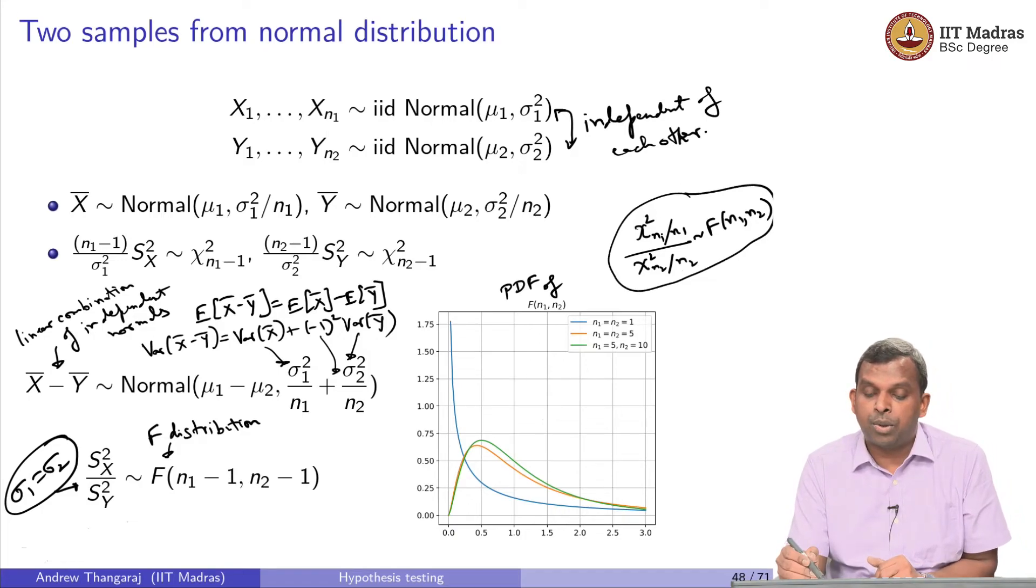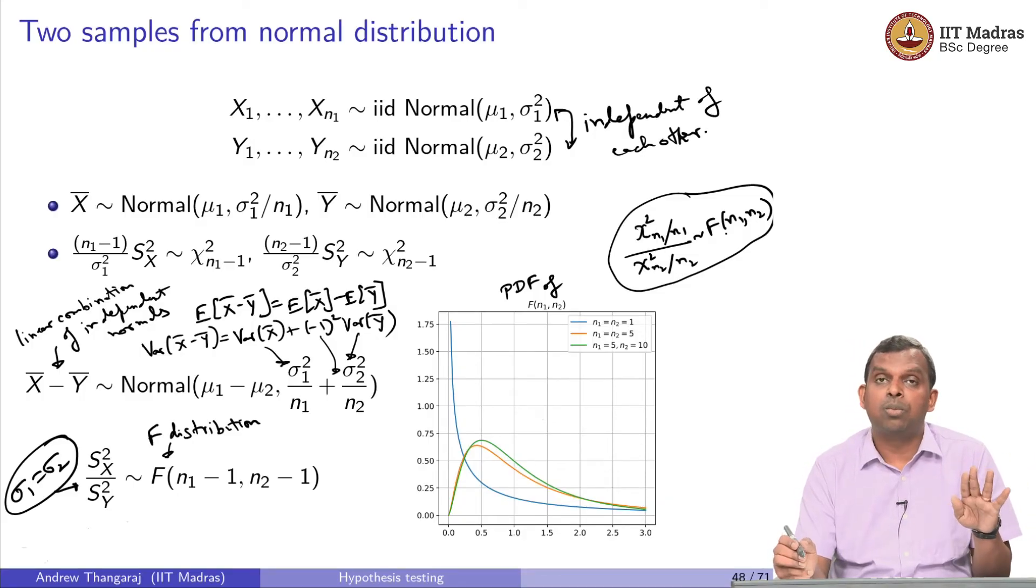If you take a chi-square distributed random variable n1 degrees of freedom divided by n1, and divided by chi-square degrees of freedom n2 divided by n2, that ratio when they are two independent things is actually F(n1, n2). It has this distribution and this F is a known distribution.